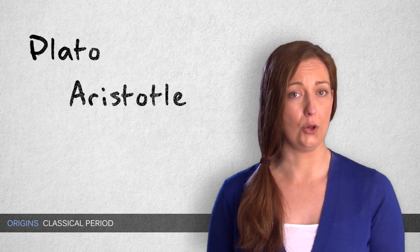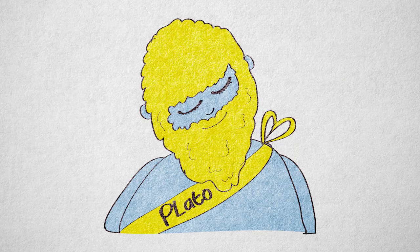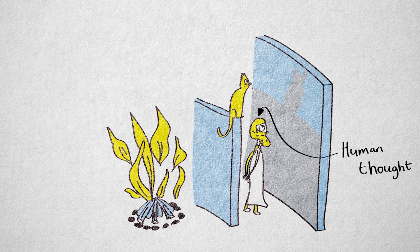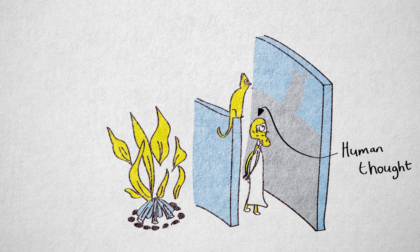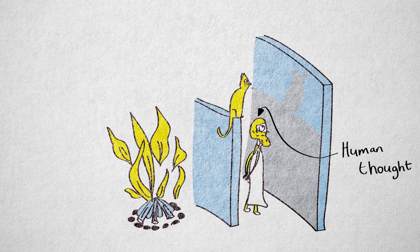But the first to really consider how to obtain knowledge were Plato and Aristotle more than 2300 years ago. To Plato, the external world and the objects in it are just imperfect reflections or shadows of ideal forms. These ideal forms are often portrayed as casting shadows on a wall.